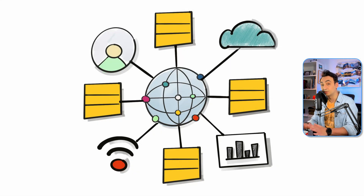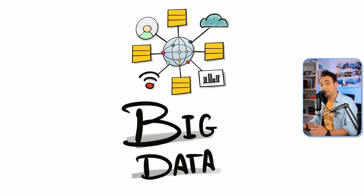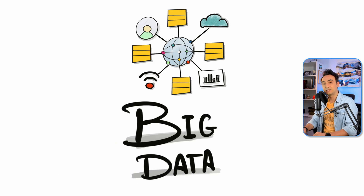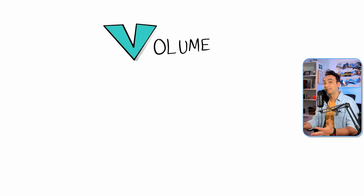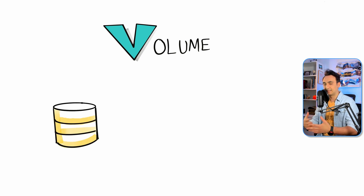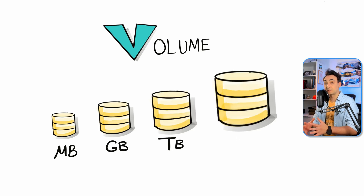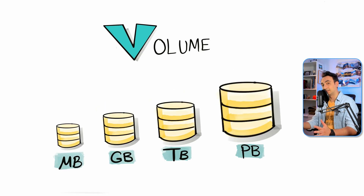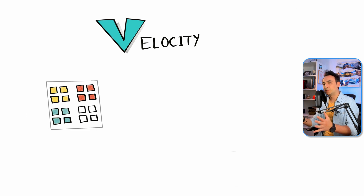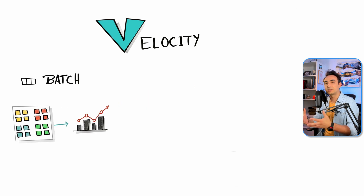That means we are no longer dealing with normal traditional data — we are dealing with big data. So what does big data mean? There are three indicators that help us understand whether our data is big, defined by the three V's. The first V is Volume. Big data is big. With the growth of the internet, mobile devices, social media, and IoT, the amount of generated data from those sources has grown dramatically.